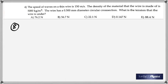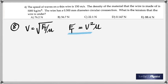And number four. Speed of waves on a thin wire is 150 meters per second. The density of the material is 5000 kilograms per meter cubed. The diameter of the wire is given. What's the tension that the wire is under? Speed is given by square root Ft by mu. But remember that mu is the mass of one meter.